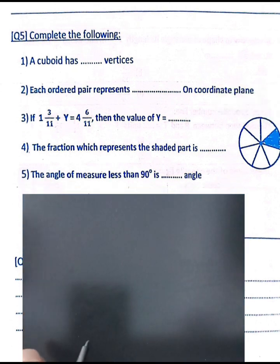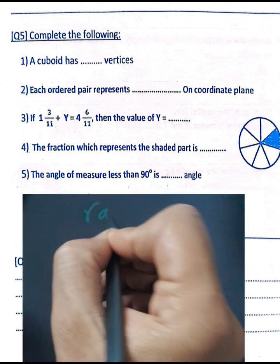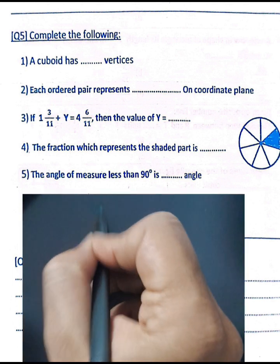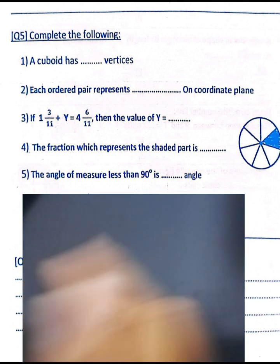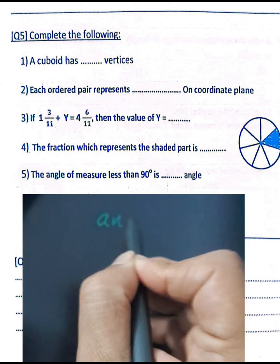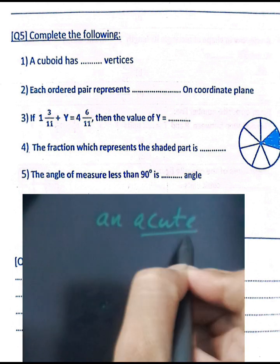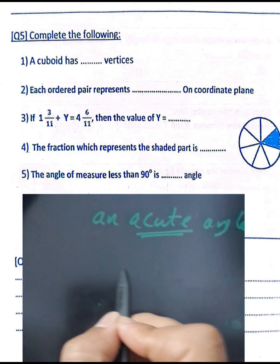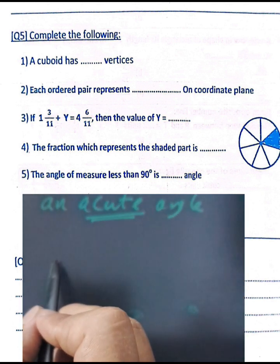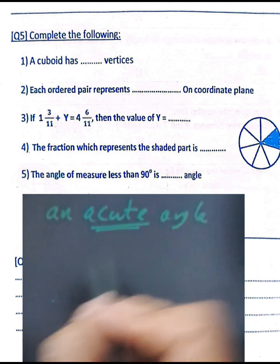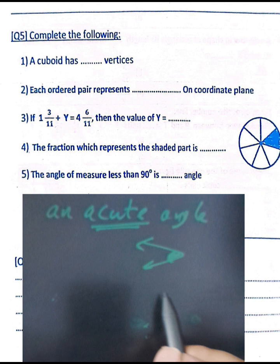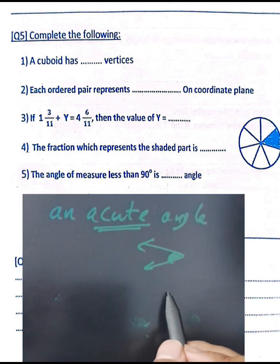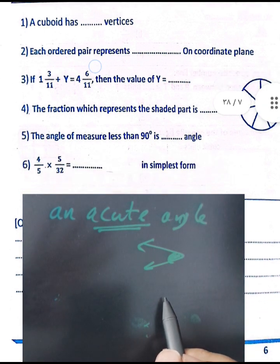Question number five: an angle of 90 degrees is called a right angle. An angle of measure less than 90 degrees is called an acute angle. For example, 30 degrees or 40 degrees — any angle greater than zero but less than 90 degrees is called an acute angle.